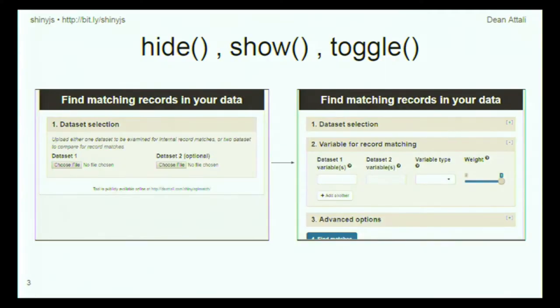The most popular functions in ShinyJS, and the main reason a lot of people use the package, are the hide and show functions. Here's an example app that uses that — an app I built a few days ago at a hackathon in Berkeley. The screenshot on the left shows how the app looks when it initializes: there's one box asking for dataset input. When you input a dataset, I use the show function to show the rest of the app. There's also a toggle function you can call to alternate between showing and hiding something.